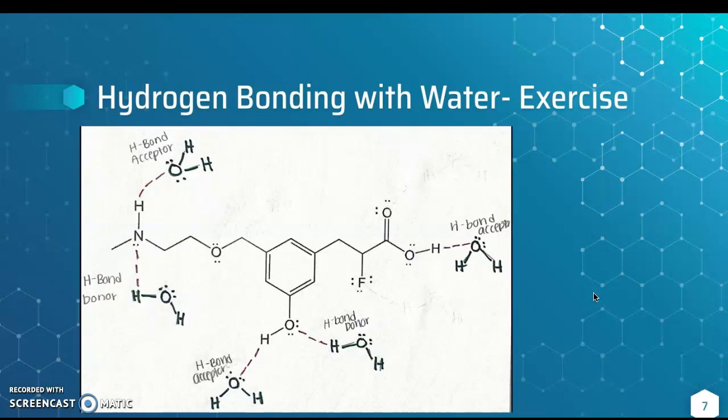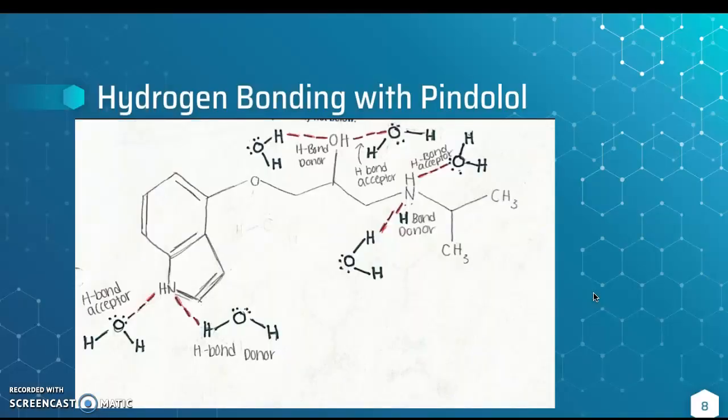For this lab, we all did an exercise with the same molecule demonstrating the H bonds. Here were my results, in which I found there were 5 H bonds. For my molecule in particular, I found that there were 6 H bonds. The image describes which are the H bond acceptors and donors.